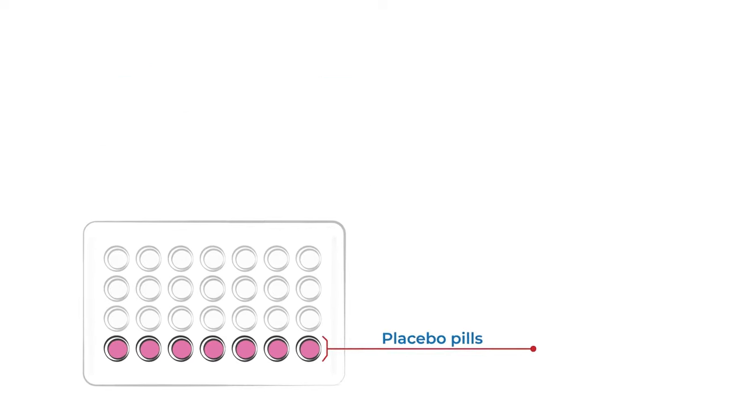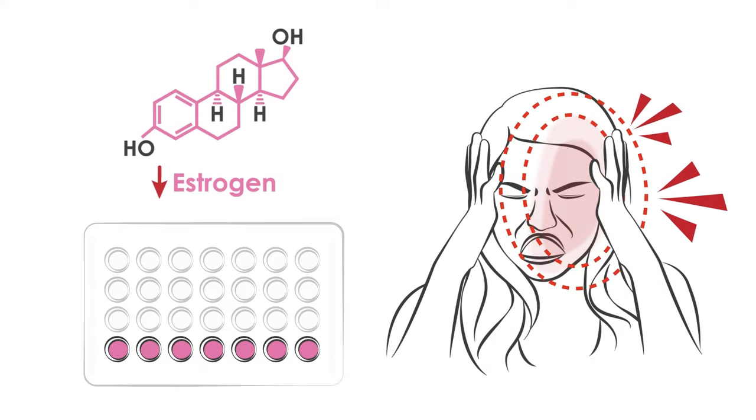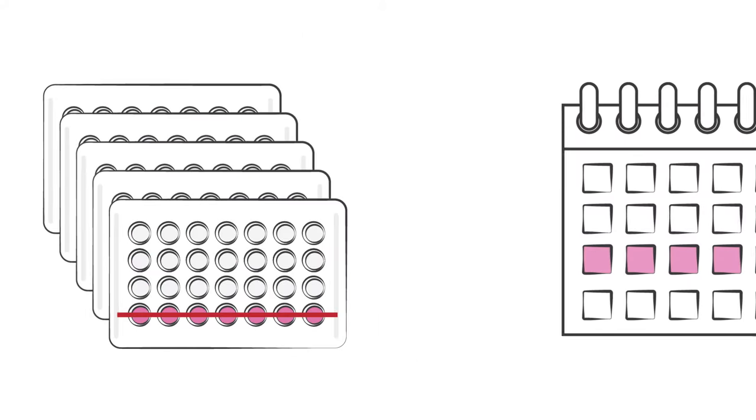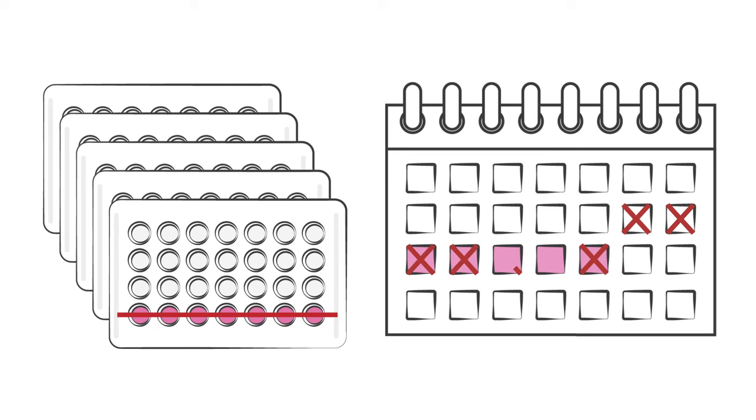During the placebo week, migraine may be worse due to the drop in estrogen. Continuous oral contraception, which does not have a placebo week, may help prevent attacks by maintaining more consistent levels of estrogen.